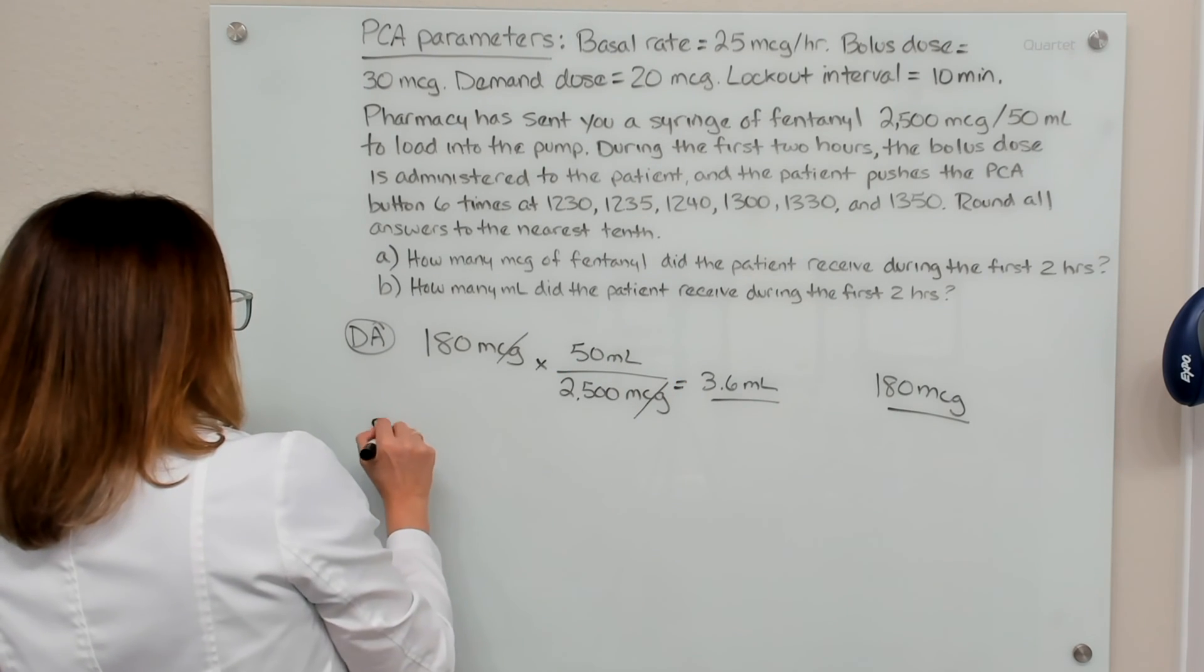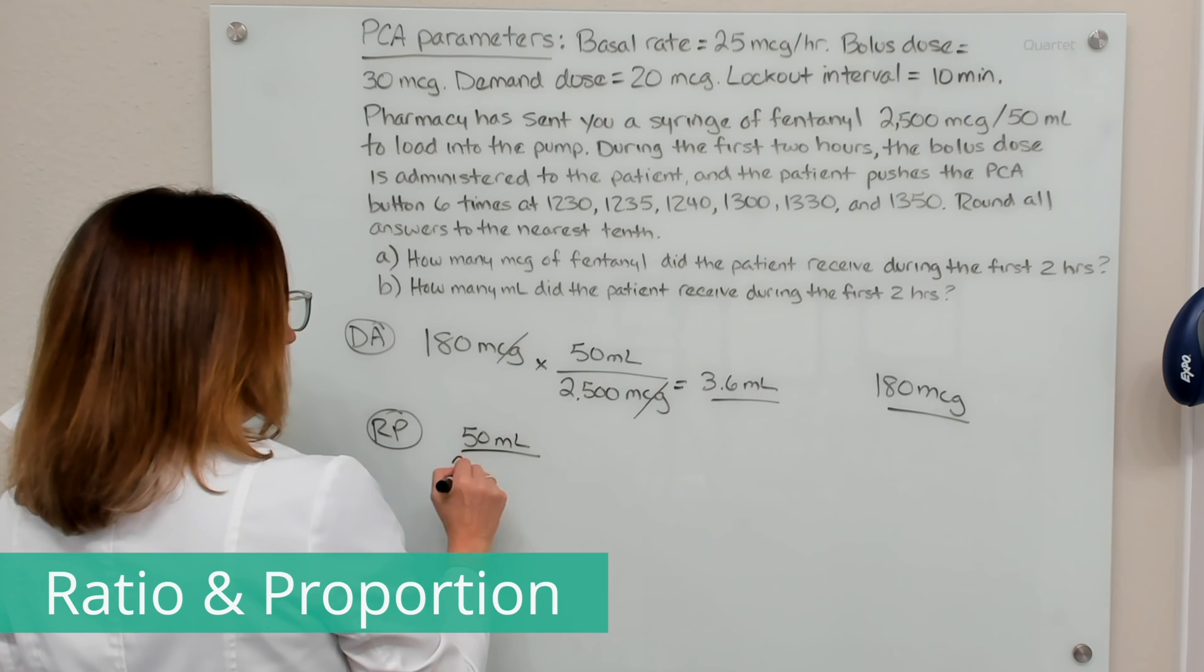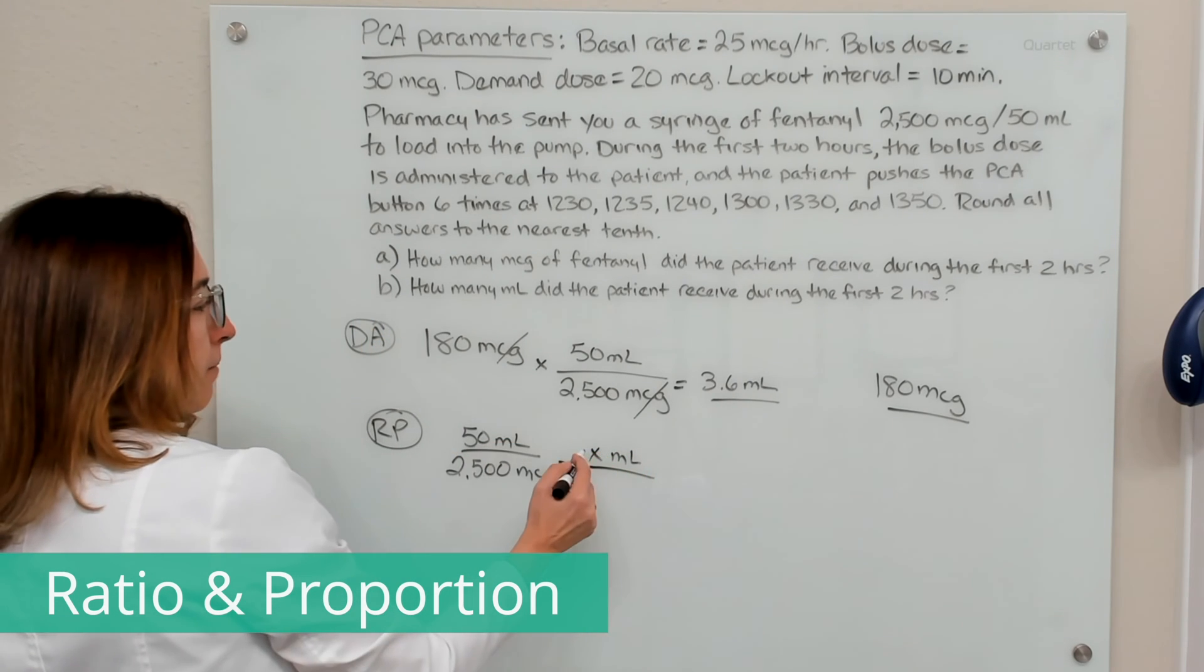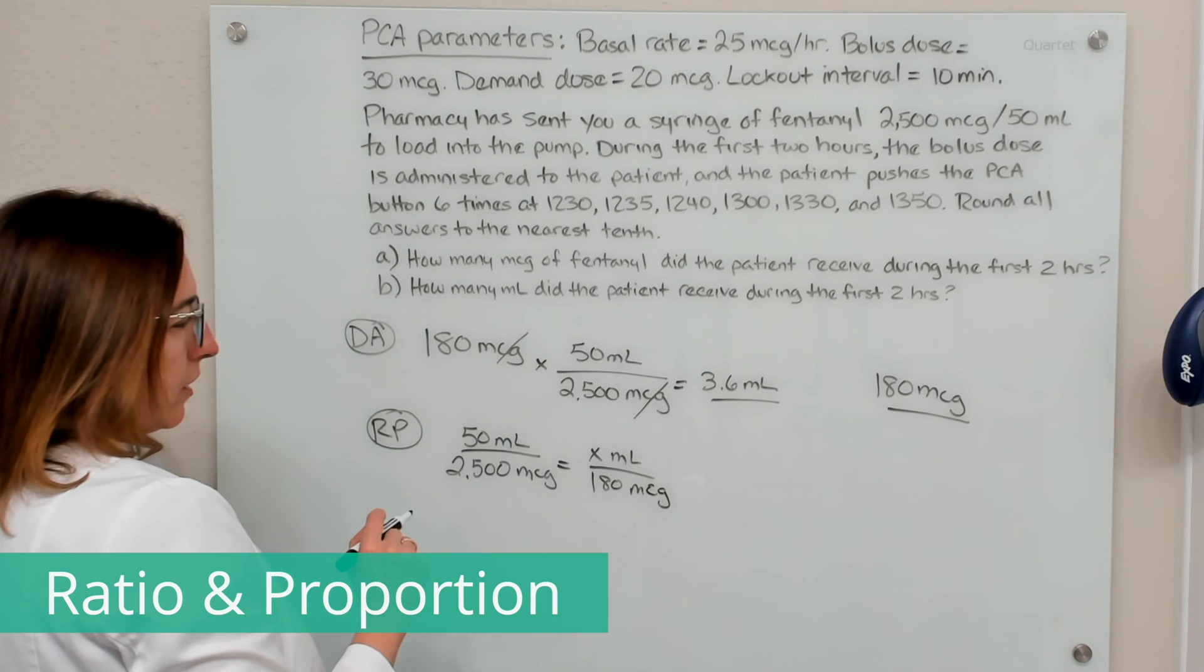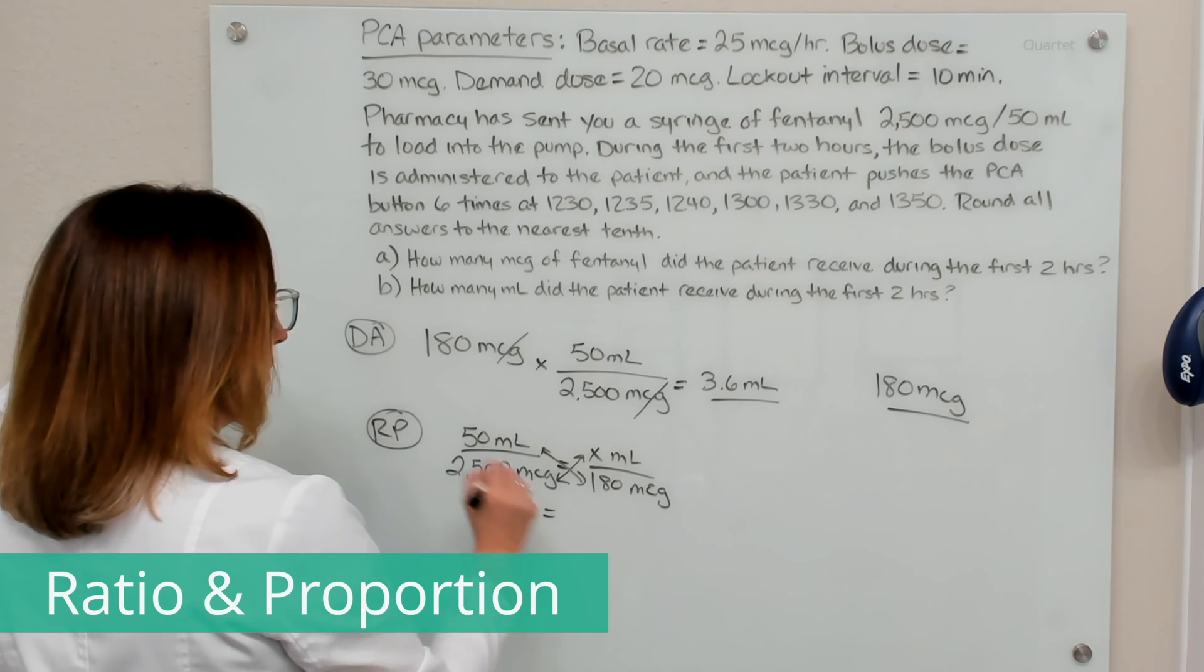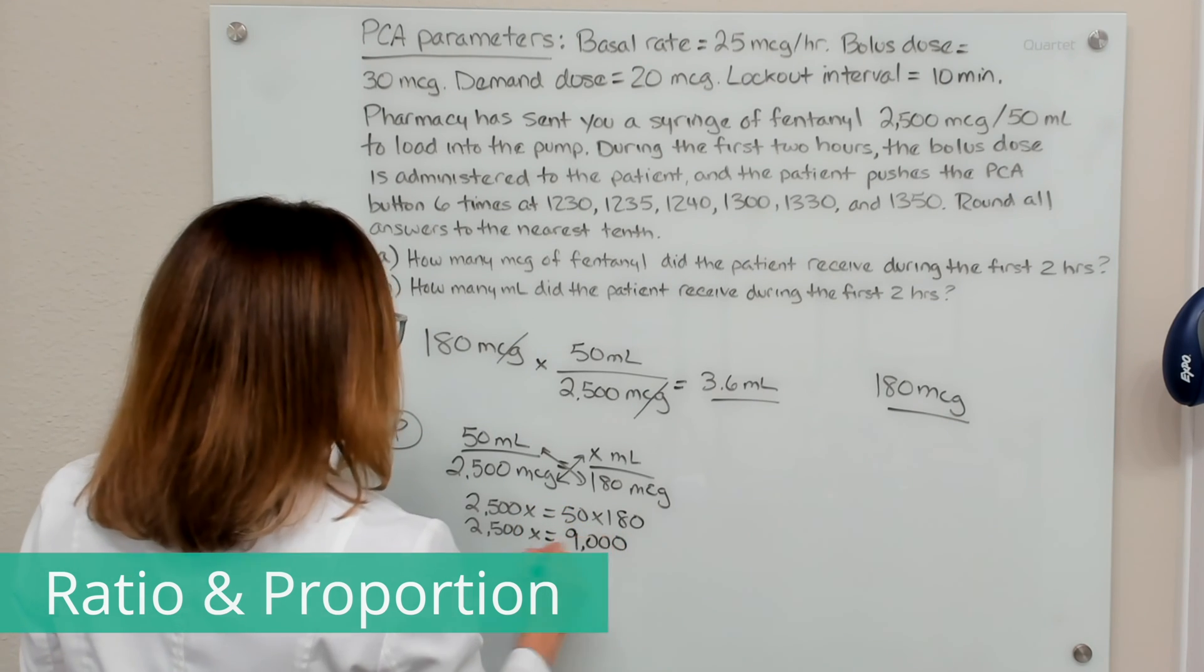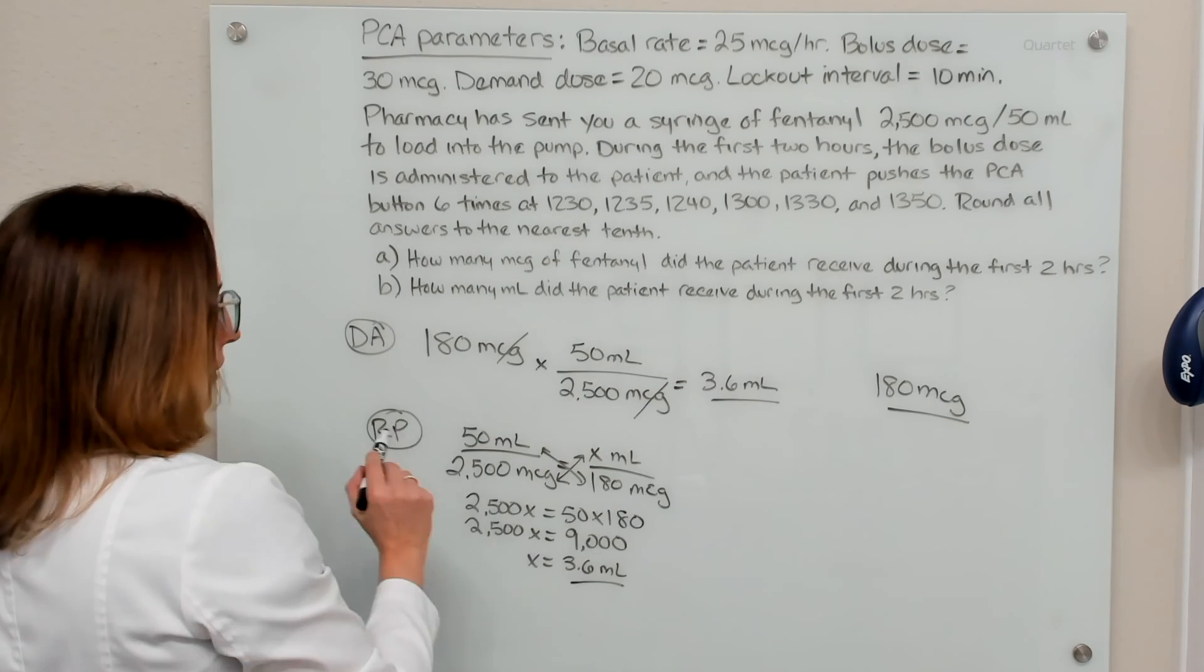We can also solve this part of the problem using ratio and proportion. On one side of the equation, we put the known ratio, which is our available concentration. On the other side, we'll put an X for the unknown amount of milliliters, and then 180 micrograms. Now I can cross multiply. So 2,500 X equals 50 times 180. So 2,500 X equals 9,000. If I solve for X, I end up with 3.6 milliliters.